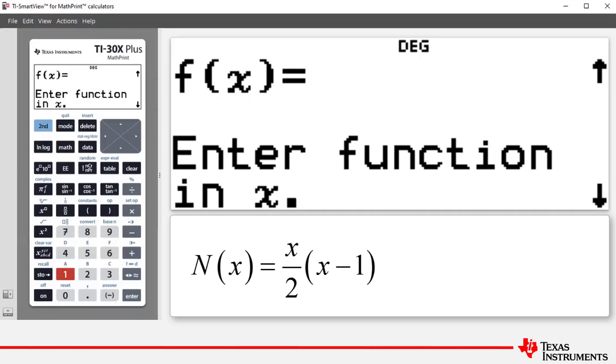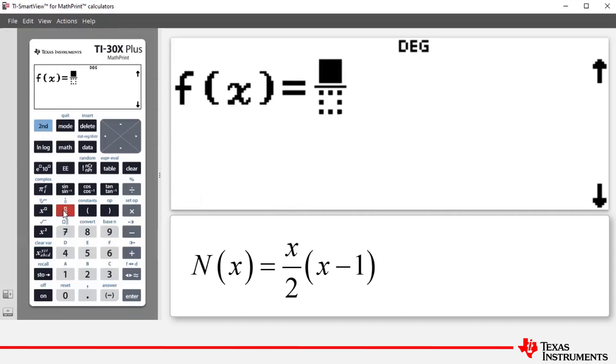So we want to enter x/2 times (x-1). We press the fraction template key, then press the variable key to access x, then press our down arrow to go down to the denominator box where we will enter 2, then press arrow to the right to get out of the fraction.